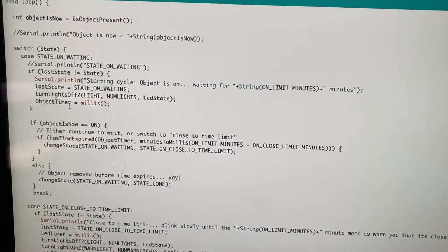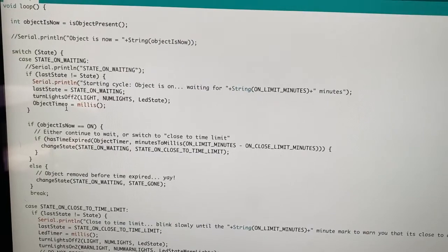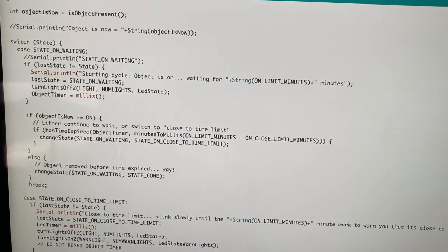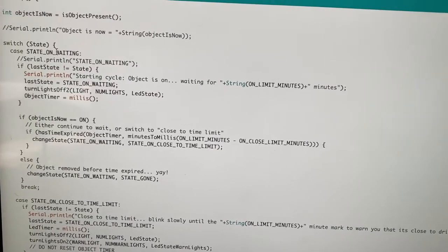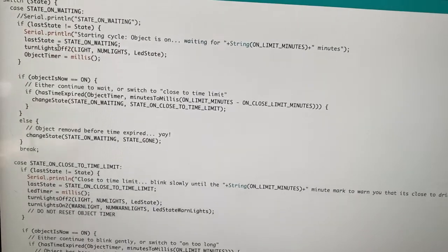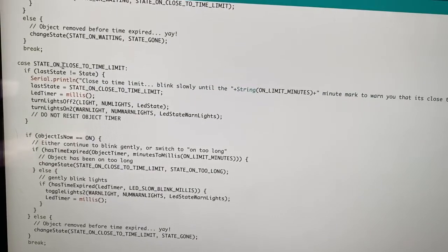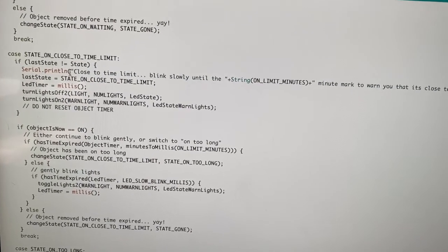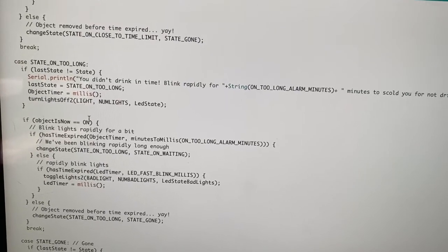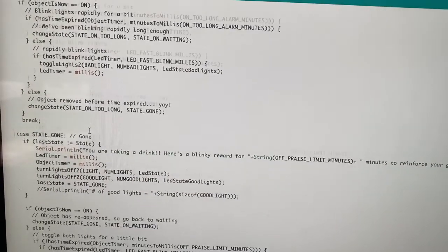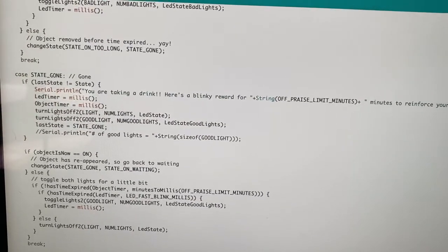So the pick-me-up is in one of several states. It's either, for example, on and waiting for a timeout, or maybe waiting for you to pick up the cup. There's a close to the time limit, where we're flashing yellow lights. There's on too long, where we're flashing red lights.